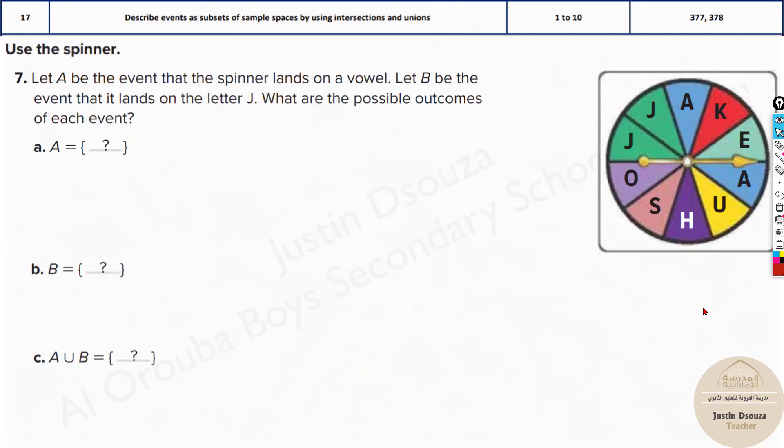Now we have another spinner with alphabets over it. So let A be the event that the spinner lands on a vowel and let B be the event that it lands on the letter J. What are the possible outcomes? Now vowels, I'll come to it in a while. The letter J, there are two letters. Do we write both? No, we just write once. The B would be just J. What are vowels? Vowels, as we know, it's A, E, I, O, U. What exactly are they? They are some special letters which will change the pronunciation. Say, for example, an apple.